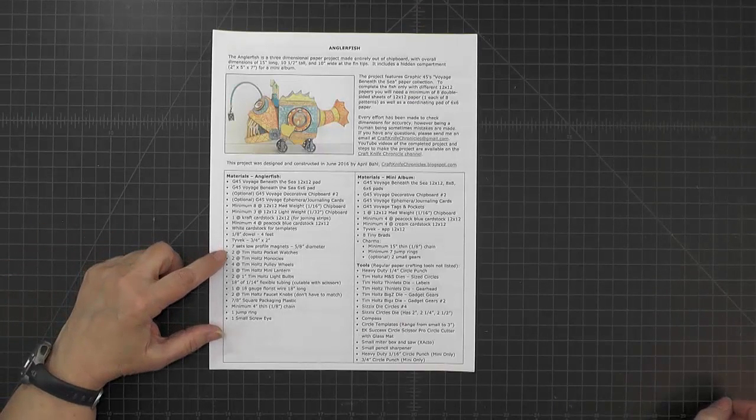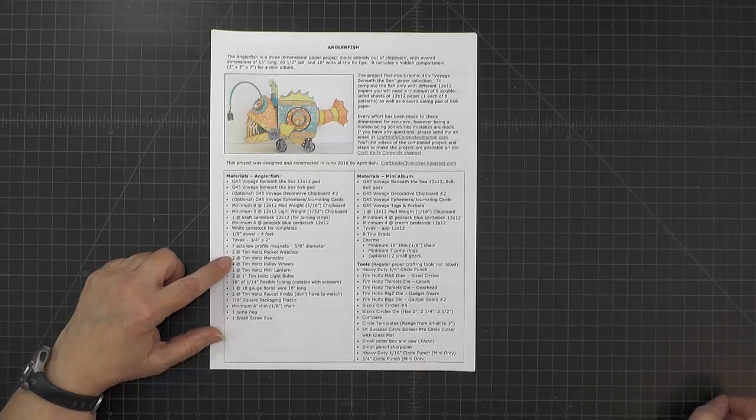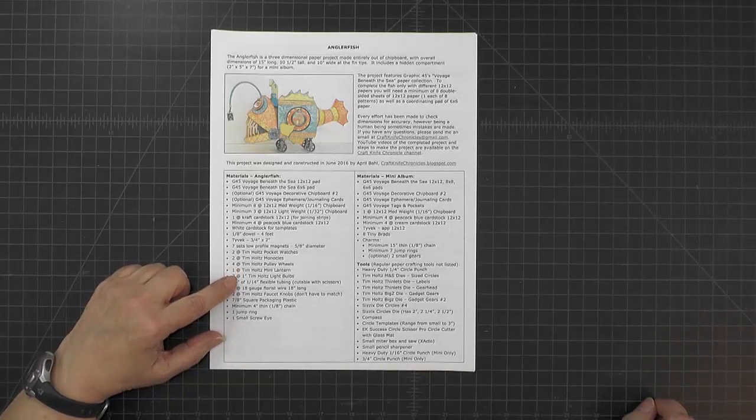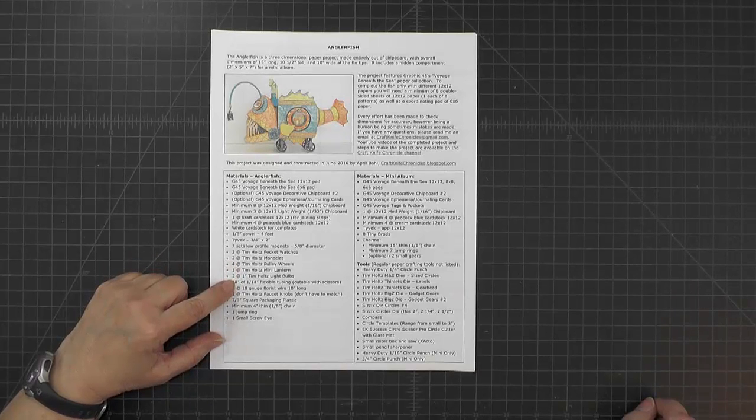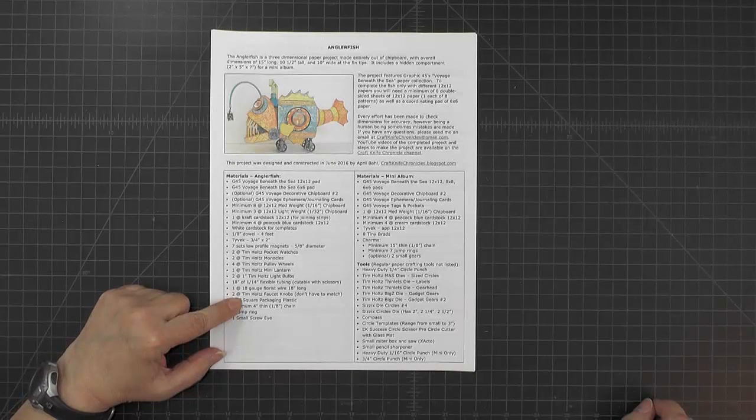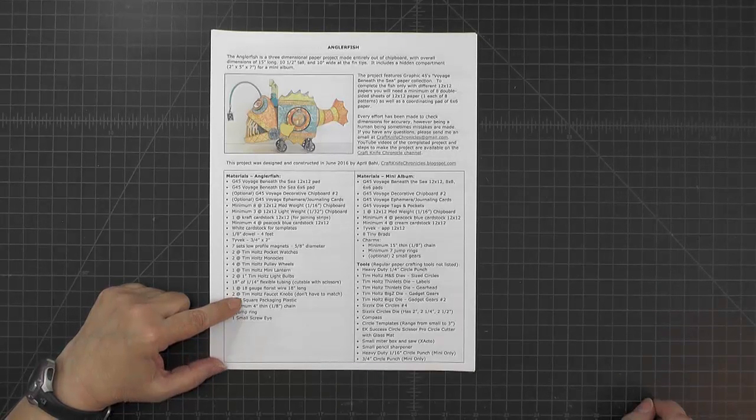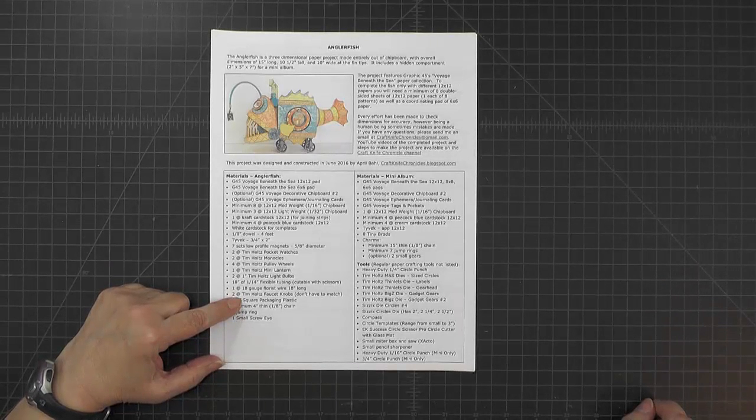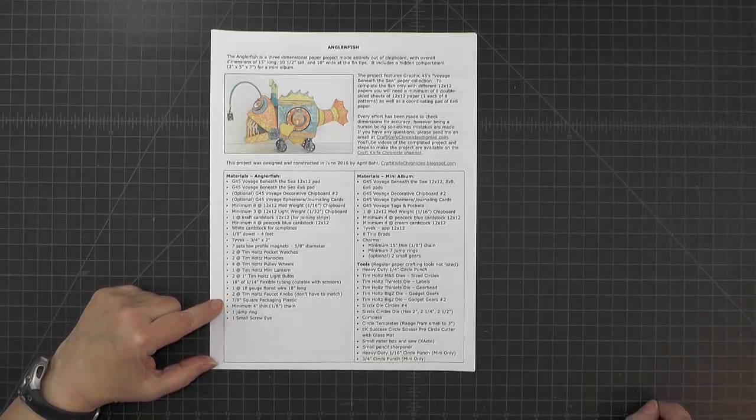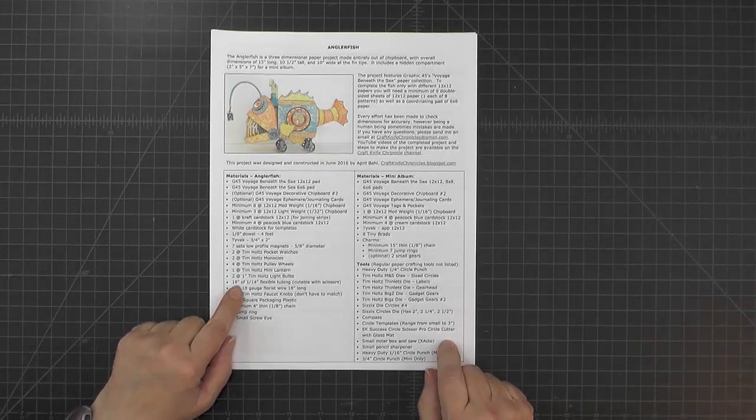Under the materials there's a variety of accessories, most of them are Tim Holtz products. It's self-explanatory: pocket watches, monocles, pulley wheels, a mini lantern and a couple of light bulbs, and then also two faucet knobs.